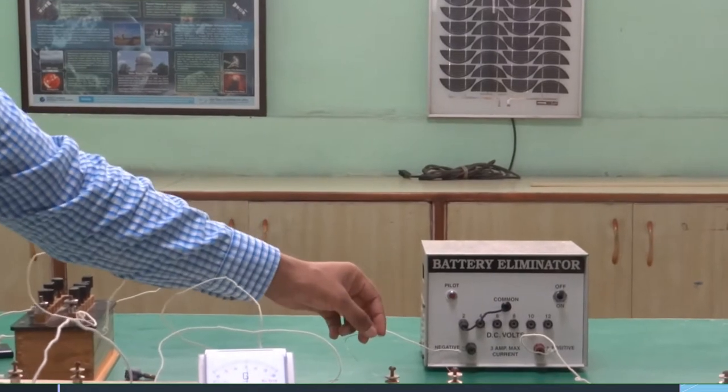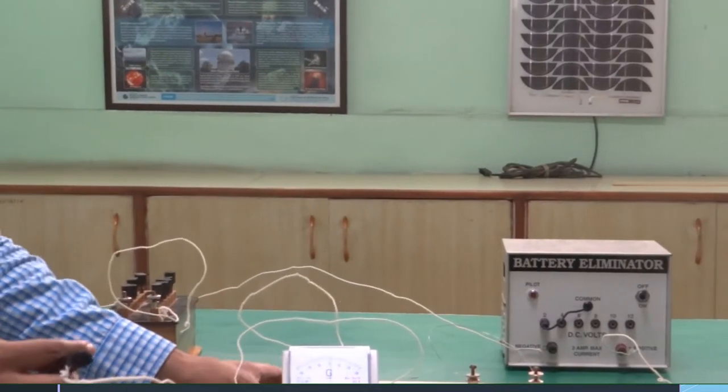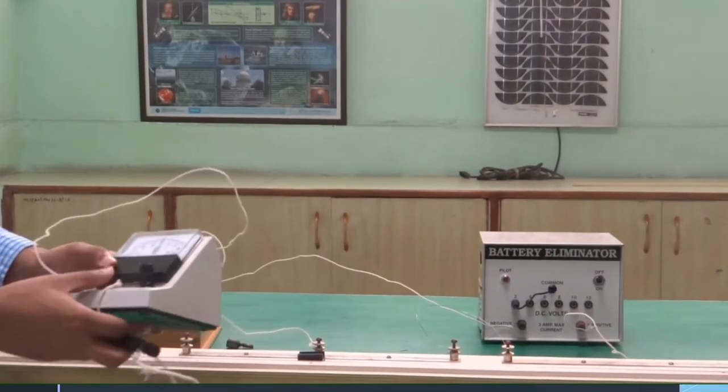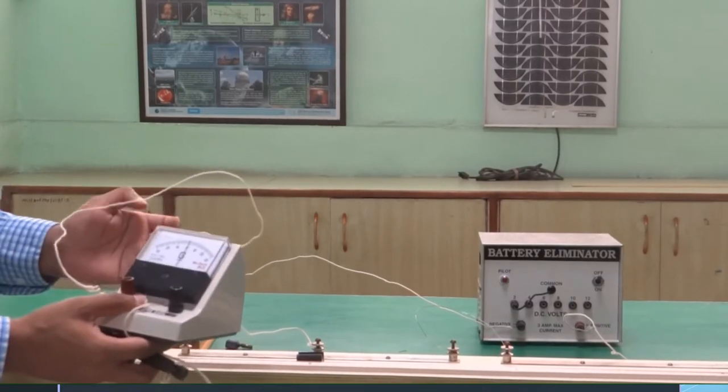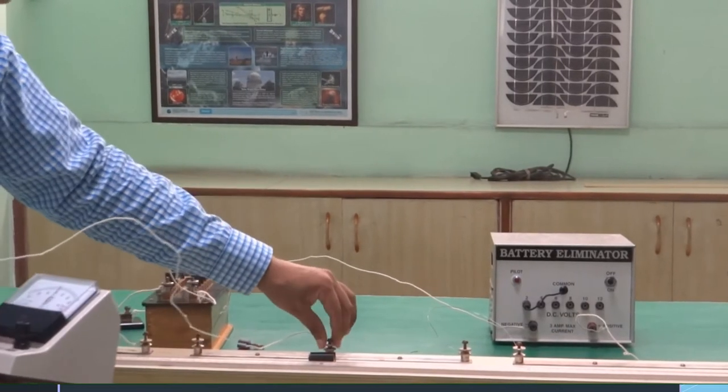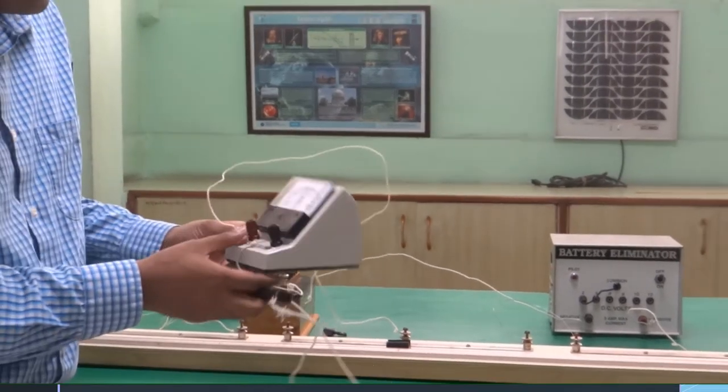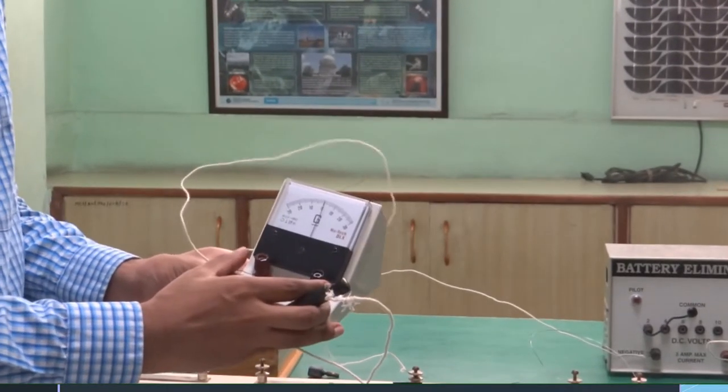The resistance of this wire is unknown. Next important thing is a jockey. This is used to determine the balance point. For the center, attach a wire and in series you will attach a galvanometer.